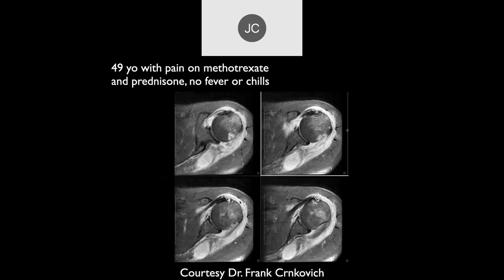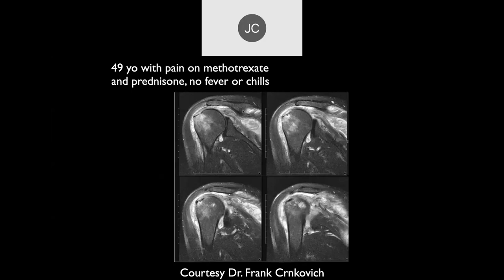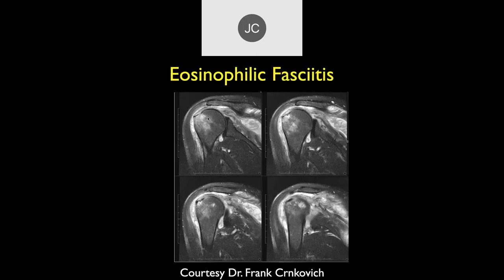Next: a 49-year-old on methotrexate and prednisone, with pain but no fever or chills. There's a lot of edema primarily in the infraspinatus, some fluid around the tendon, and some bone edema. This patient had eosinophilic fasciitis — typically diagnosed by biopsy where you see a lot of eosinophils. It's really a type of allergic/inflammatory reaction predominantly involving eosinophils. It can be focal but also very diffuse.